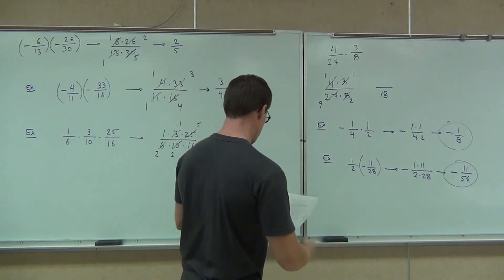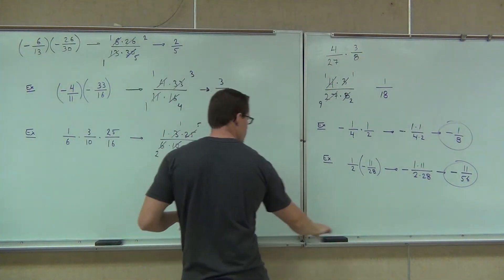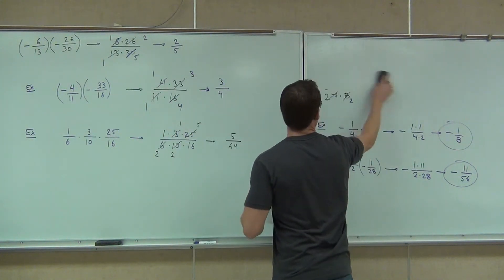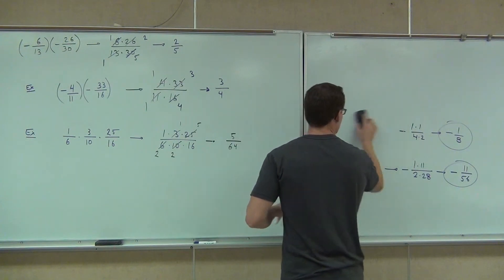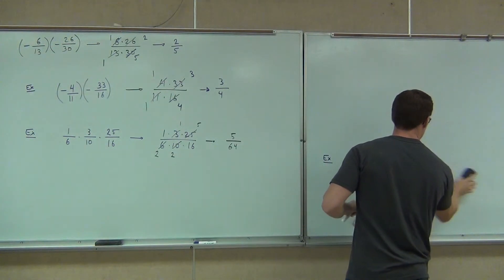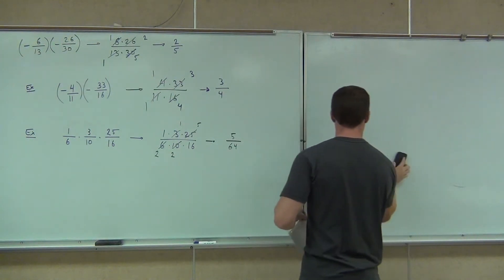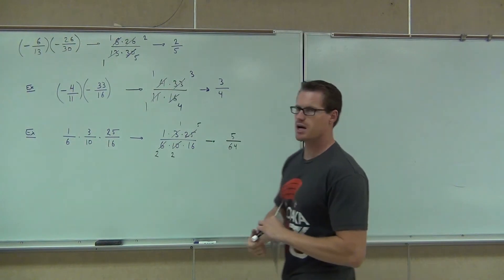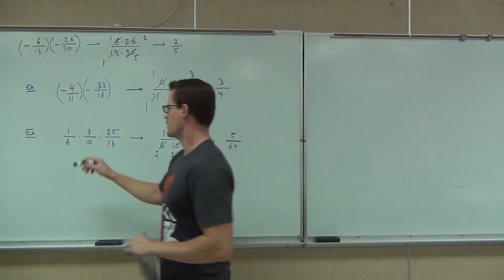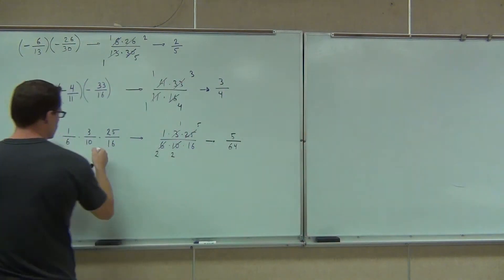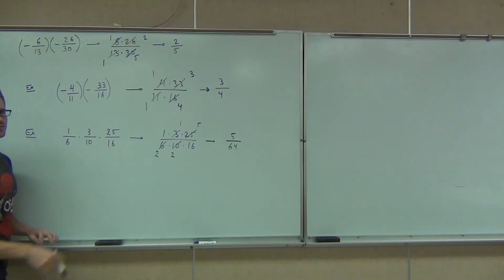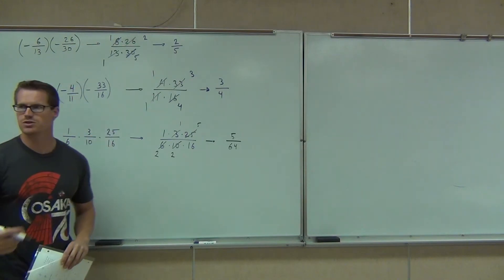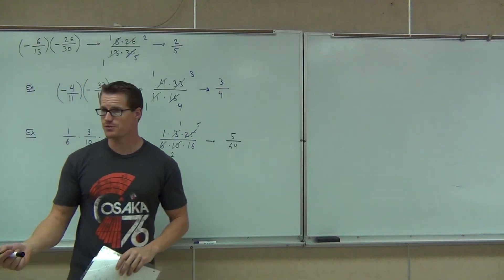If you would like to do this two at a time, you may. We would write this as one fraction. 3 and 6 would simplify out, then we'd bring another one down and simplify from there. So you could do this in two steps if you'd like to.